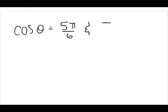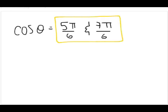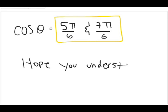So in conclusion, the cosine of theta will equal 5π/6 and 7π/6. I hope you enjoyed this video and that you learned how to solve this equation and will help you in future problems as well. Thank you.